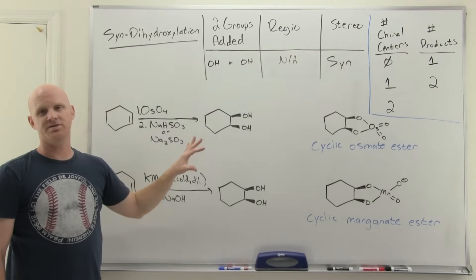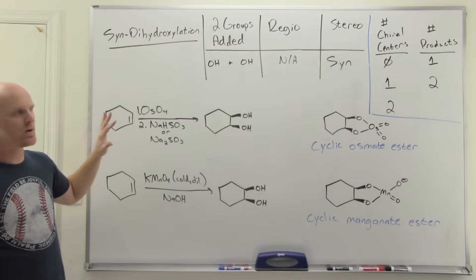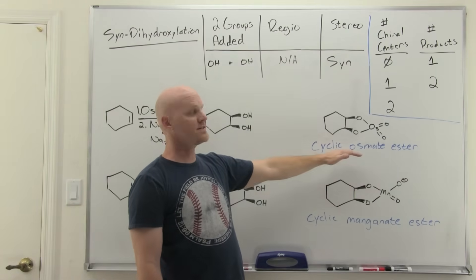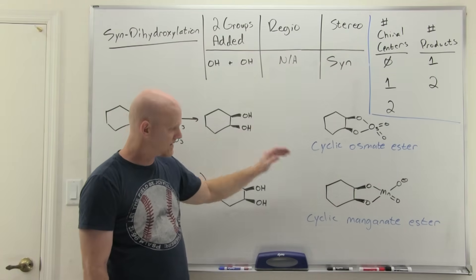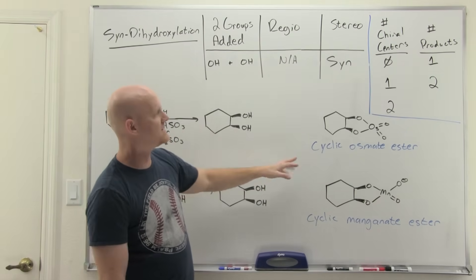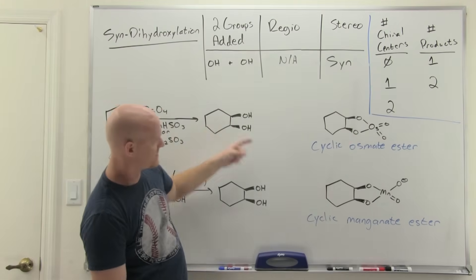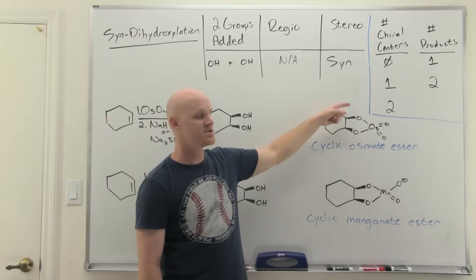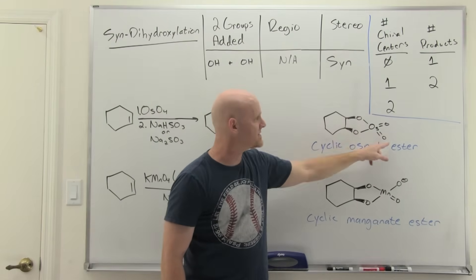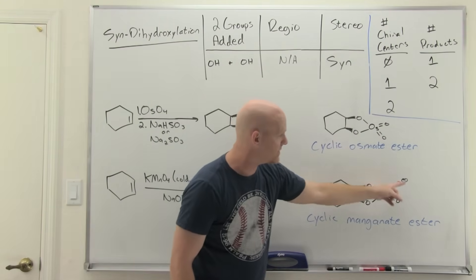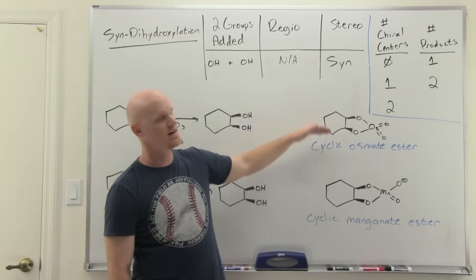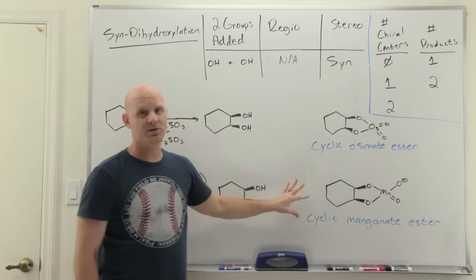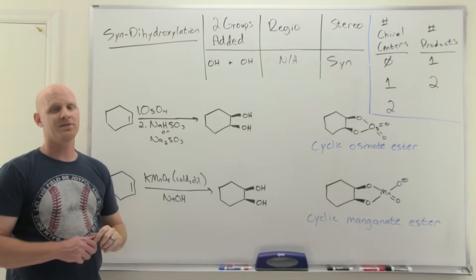We typically don't require students to know the mechanism for this, however, we often show you the major intermediates involved. With osmium tetroxide, you get a cyclic osmate ester. With potassium permanganate, you get a cyclic manganate ester. The idea is you can see why these two oxygens, which are the ones for the product in either case, you can see why they have to end up being cis to each other on the same face. Because they come from the same molecule of OsO4 or MnO4- in either case. Like I said, don't have to know the mechanism here, but I did want to show the intermediates to explain why it ends up being a syn addition.